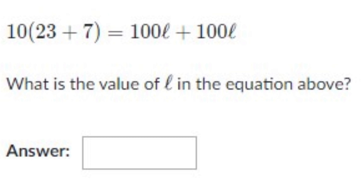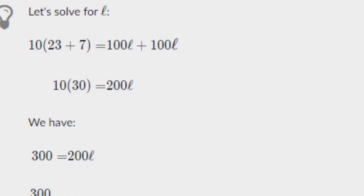So now let's solve the solution. Here 23 plus 7 equals 30. Therefore we can write 10 times 30 equals 100L plus 100L equals 200L. Therefore 10 times 30 equals 200L. We know that 10 times 30 is 300.